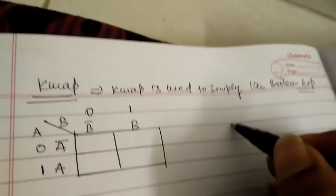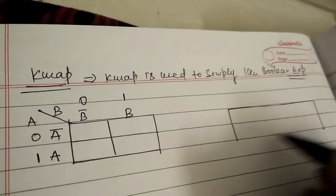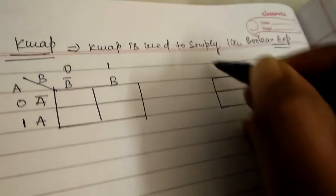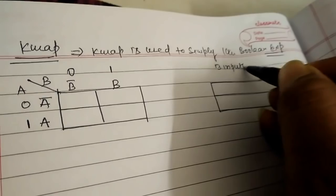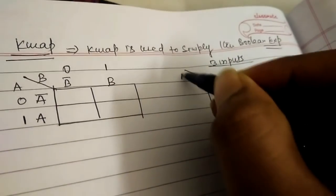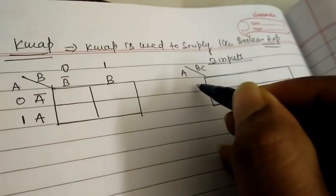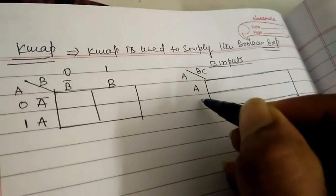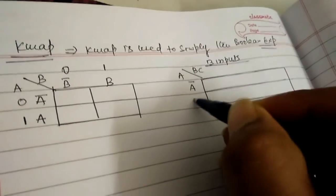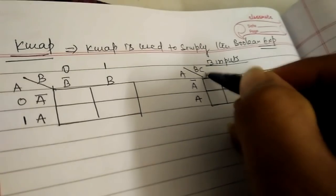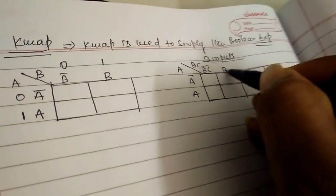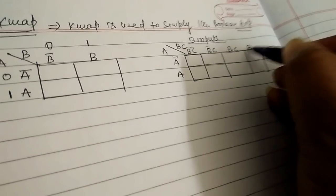For three inputs, A is on one side, and B and C are divided into four parts: B bar C bar, B bar C, BC, and BC complement. This is the format of the K-map for three inputs.